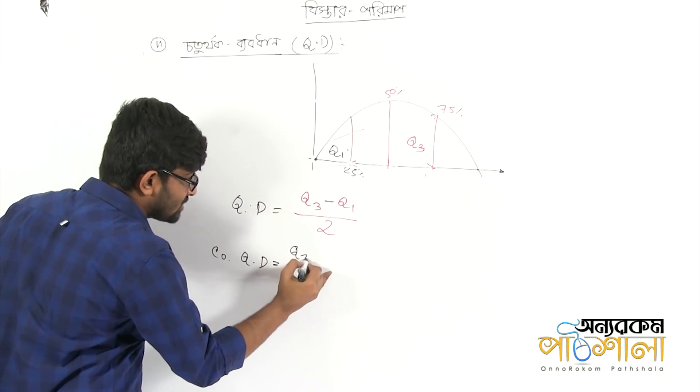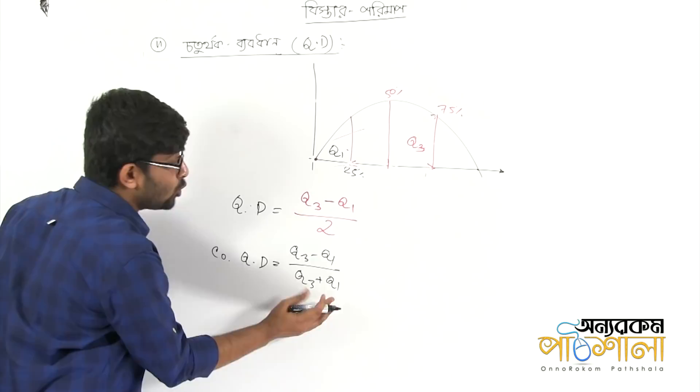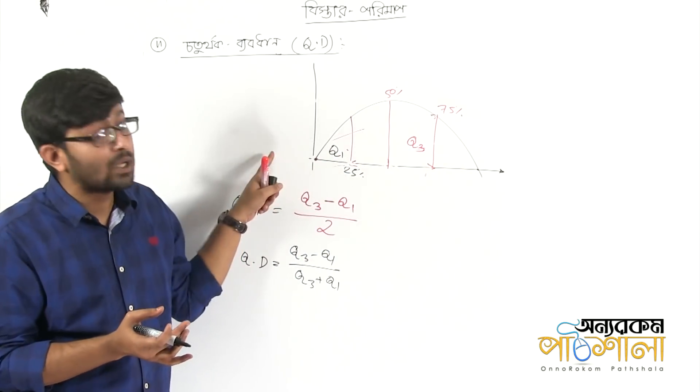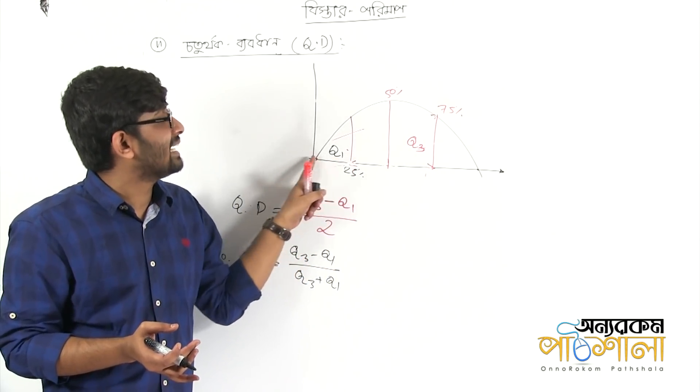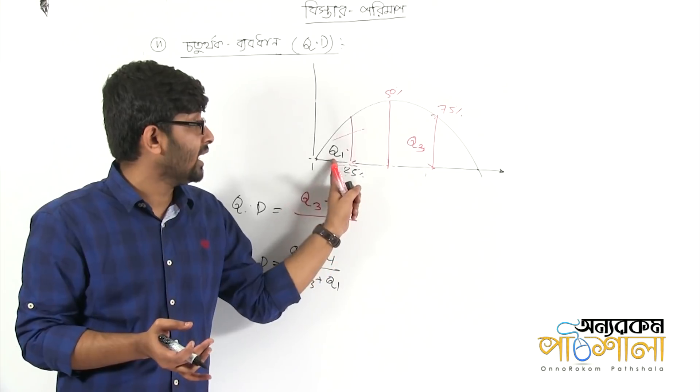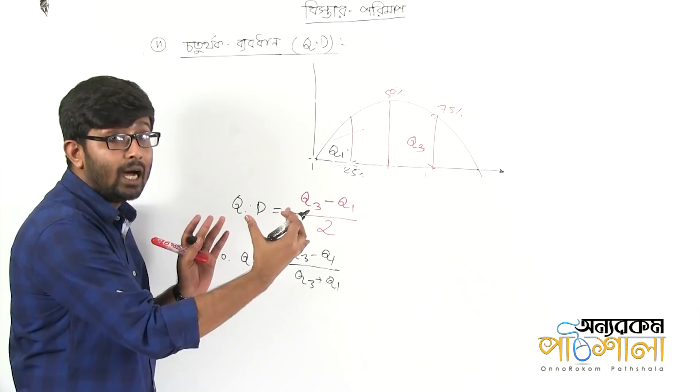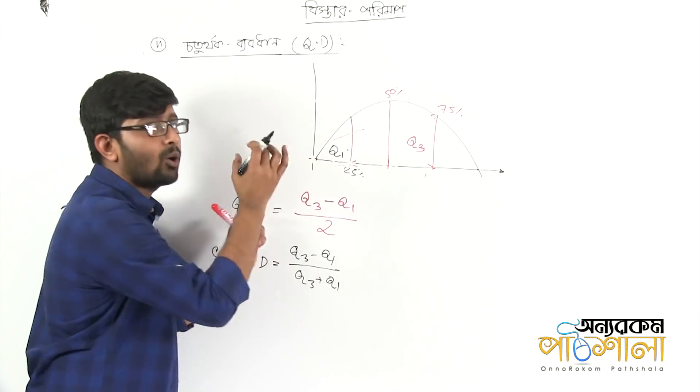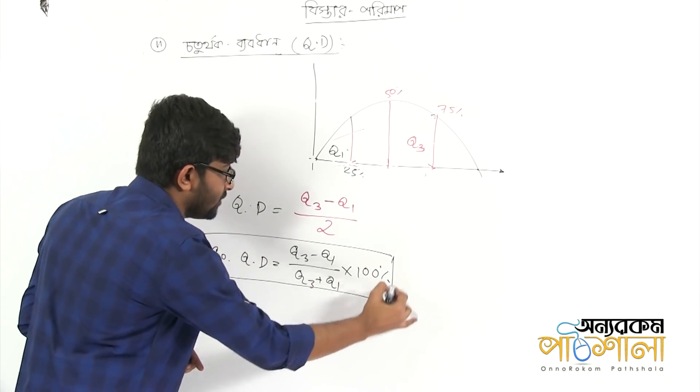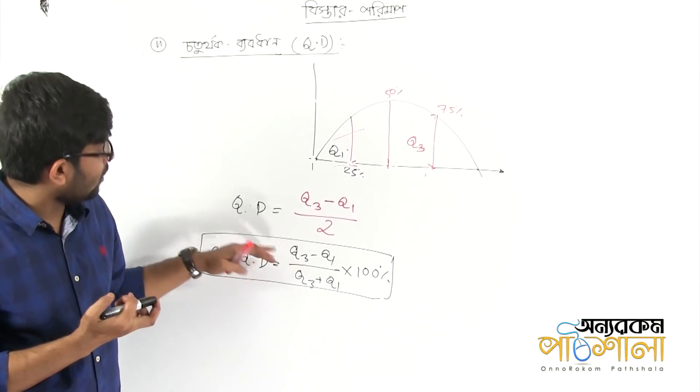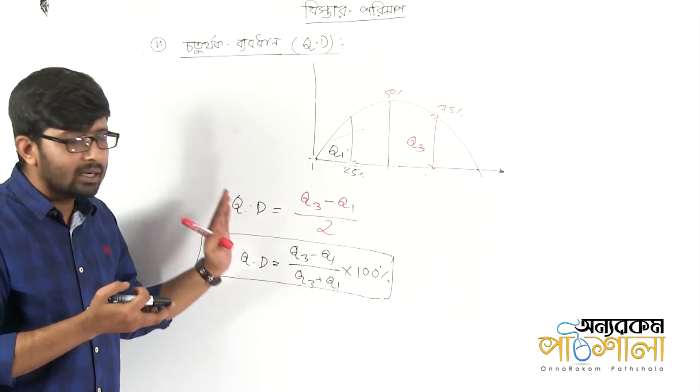How do we put this? Here we have the value. The total value is Q3 and Q1. The percentage we have said is coefficient of quartile deviation. If we do the next step, we will see the quartile deviation of Q3 minus Q1 by 2, and the coefficient of quartile deviation is Q3 minus Q1 divided by Q3 plus Q1.